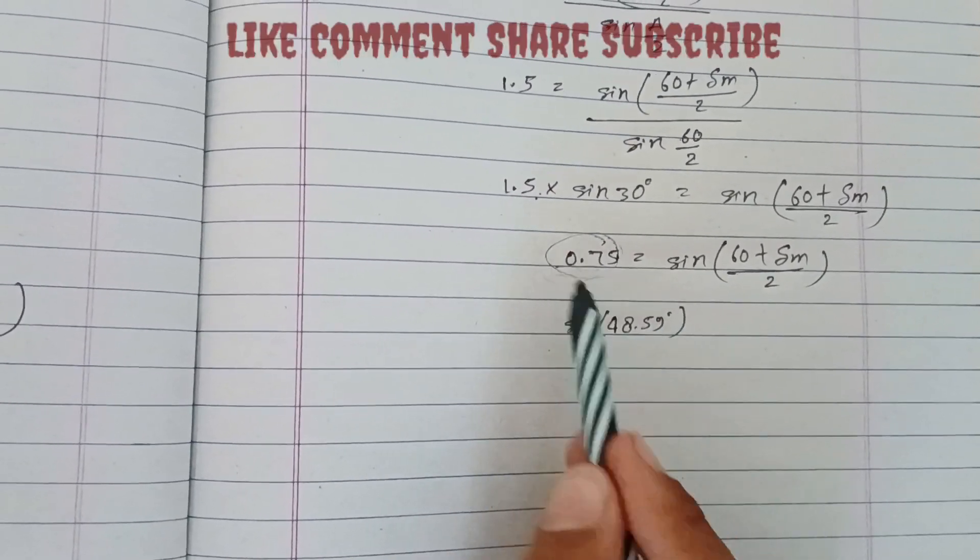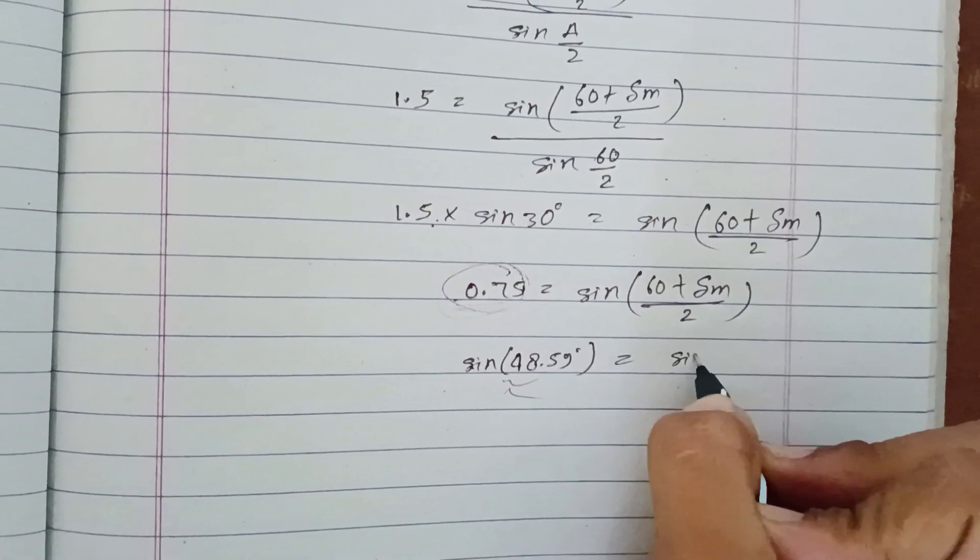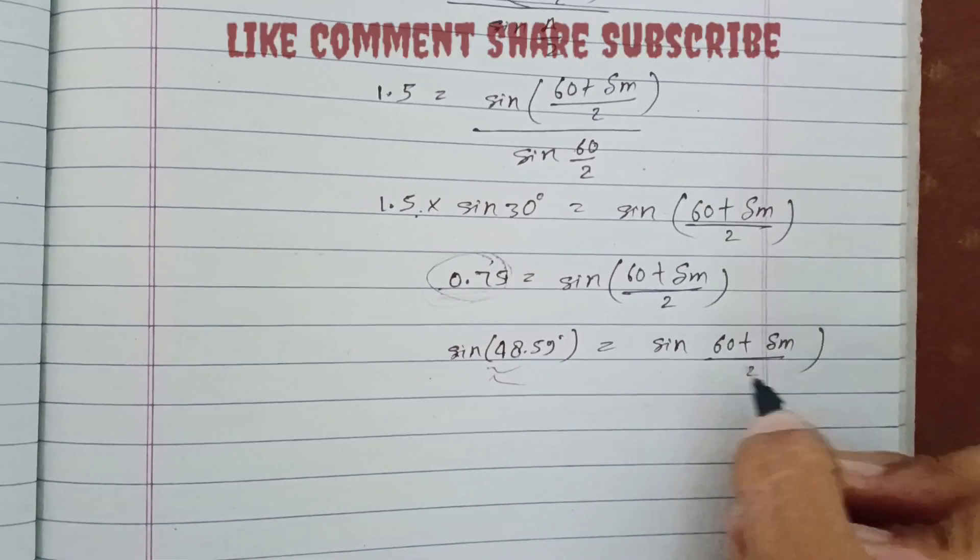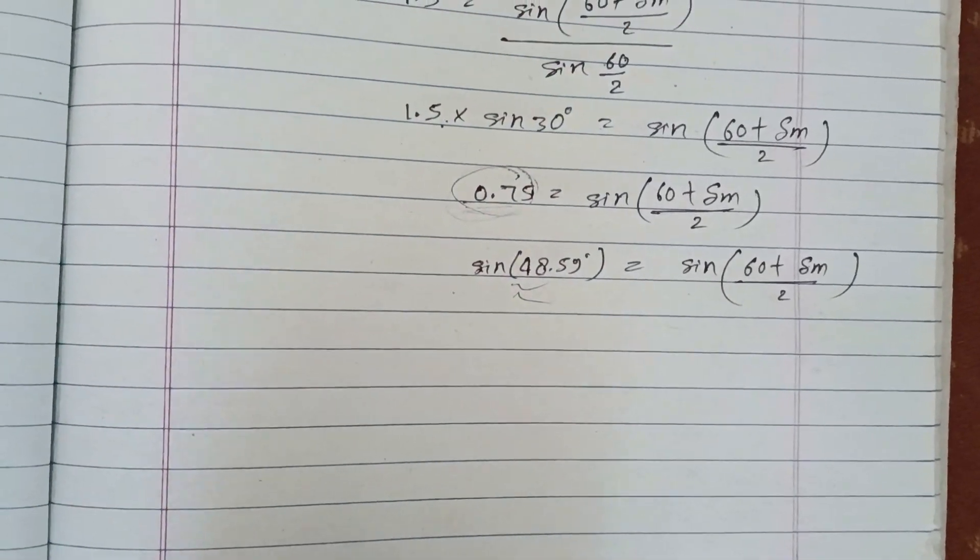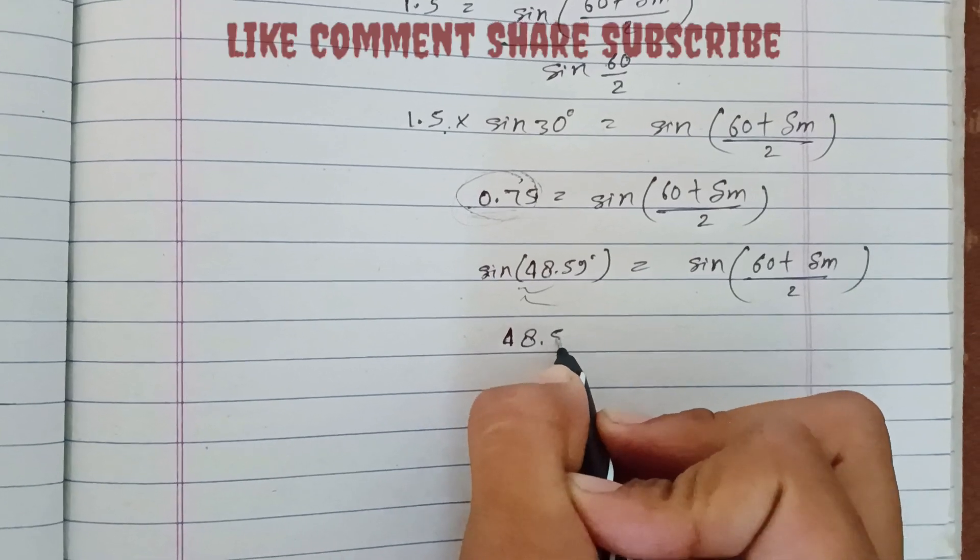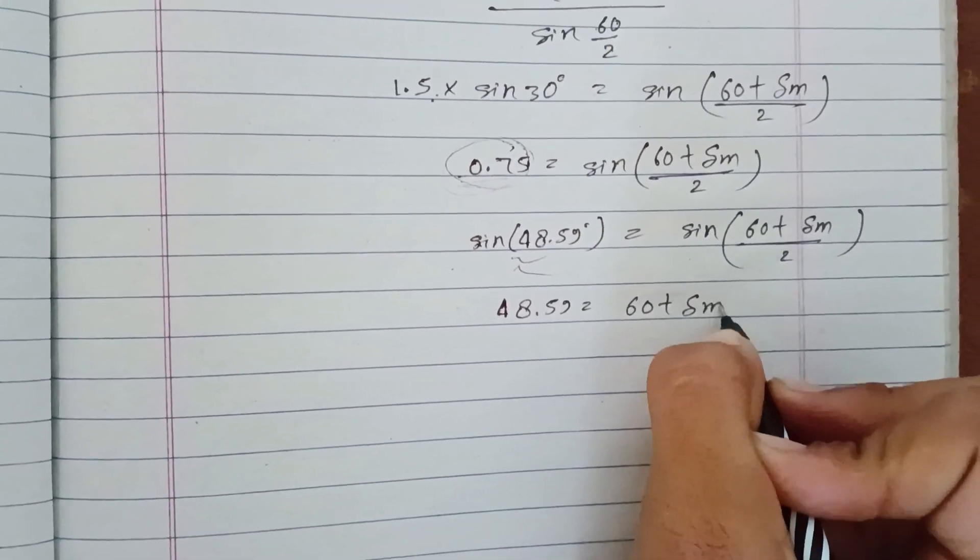So sin inverse equals (60 + δm)/2. Therefore 48.59 = (60 + δm)/2.